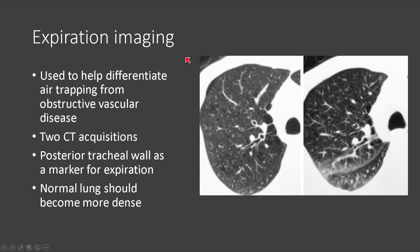There are different ways to acquire expiratory imaging. Continuous expiration imaging images the entire chest from top to bottom as the patient blows out. Segmental expiration acquires a few slices in the upper, mid, and lower lung zones to reduce dose. Dynamic expiration imaging focuses on three areas of the chest, continuously CT-ing each area so you can watch the lung transition from air-filled to airless.